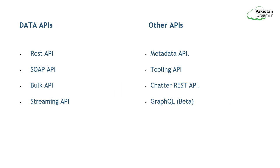There are two classifications of APIs. The first one is the Data API, under which we have REST, SOAP, Bulk, and Streaming. On the other side, we have other APIs which consist of Metadata, Tooling, Chatter REST, and GraphQL, which is still in beta.